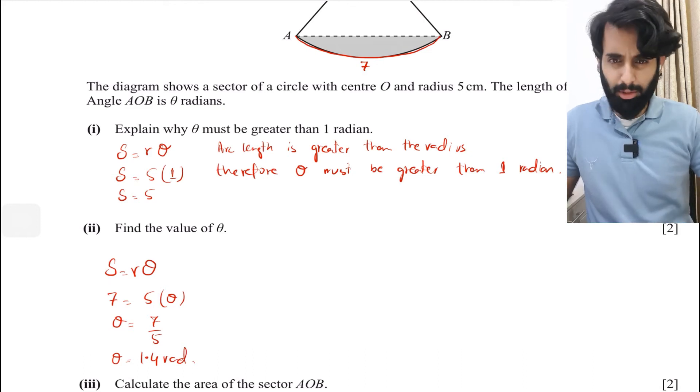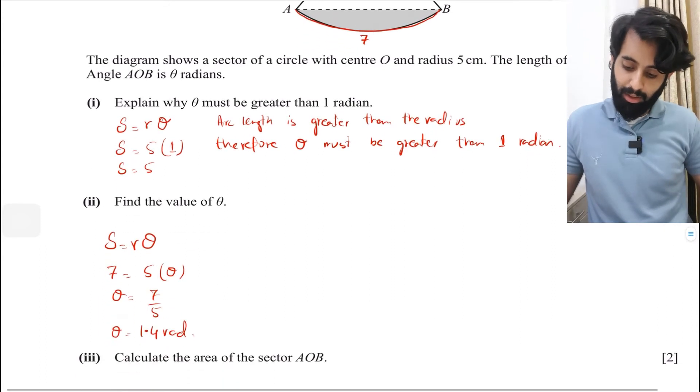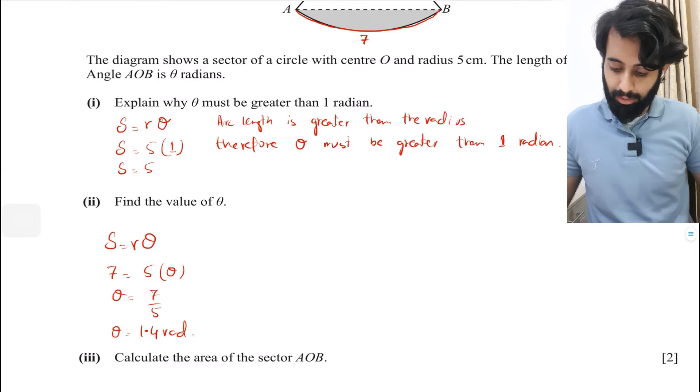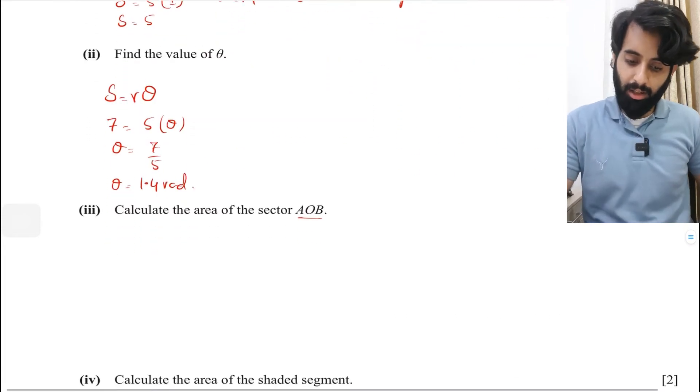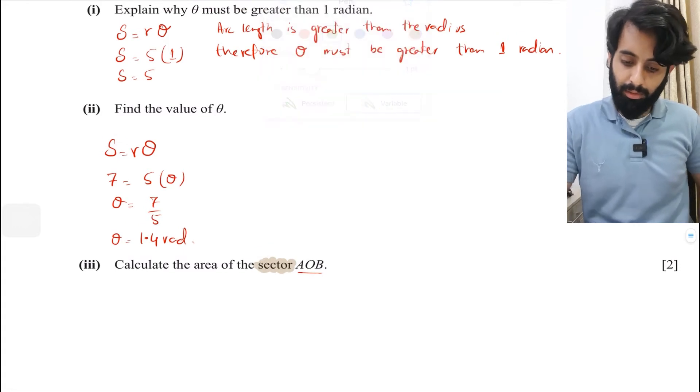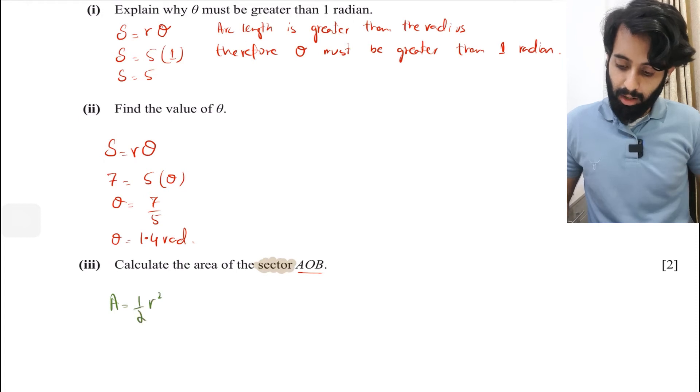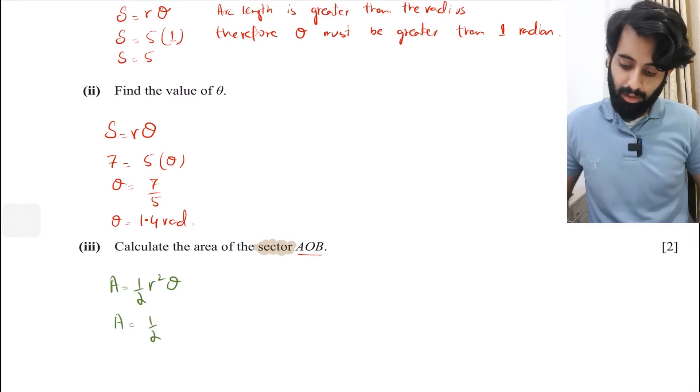Calculate the area of sector AOB. Don't confuse yourself and think it's asking for the area of triangle. It categorically says area of sector AOB. There are two formulas for calculating area of sector: one is half r² θ, but if you replace r θ with s you get another formula. I'm going to use the second formula, half r s, because radius and arc length were initially given to us.